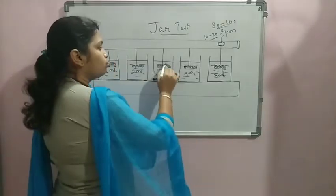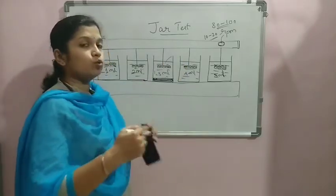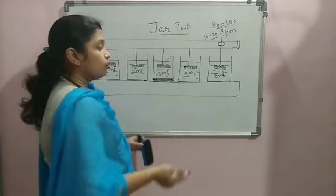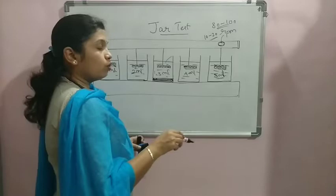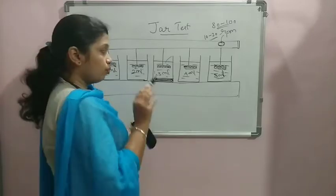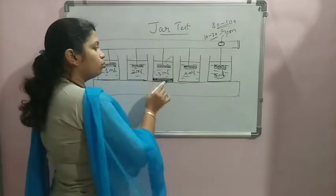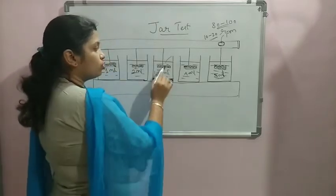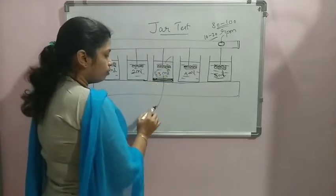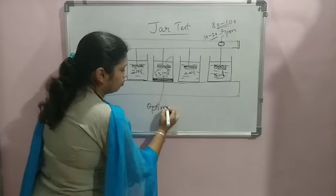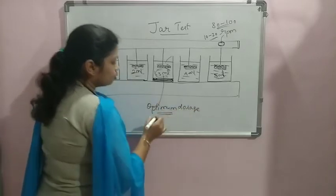That will be giving us which jar is having optimum dosage which can do the maximum of the work. Since we are adding more of the coagulant, it may have removed better, but we don't want to go for an uneconomical dosage. We want to choose the minimum dosage that can do the best work. In order to do that, we will be visually checking which water is more clear and we will be picking that as optimum dosage.